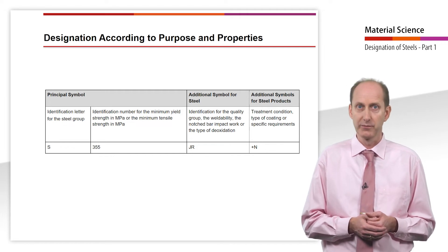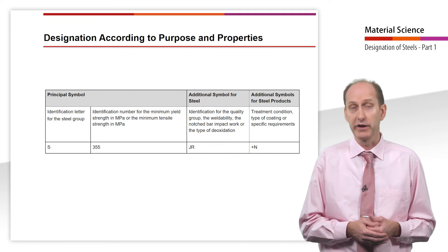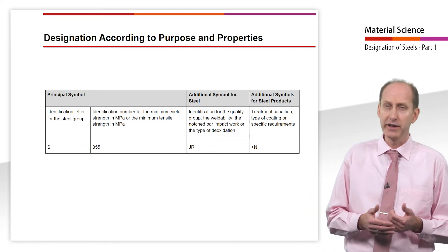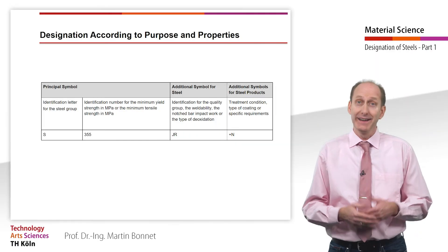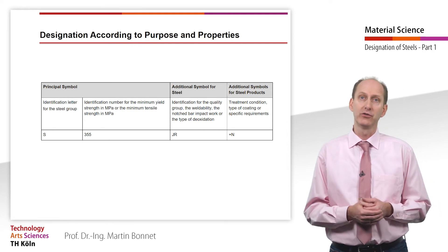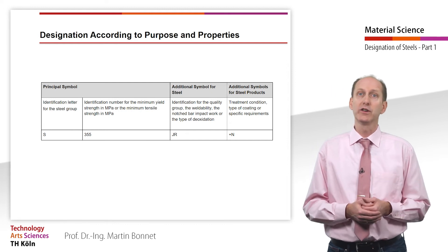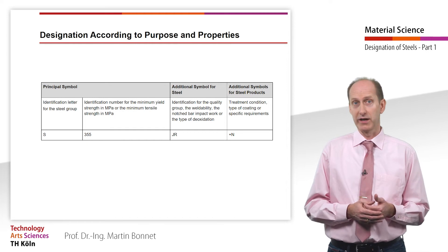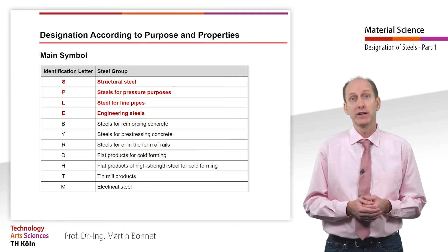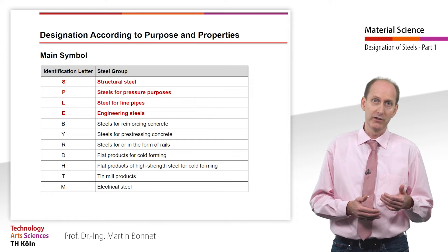For example, S 235. These can be followed by additional symbols for the quality group, the vulnerability, or the notch bar impact work — for example, JR for a value of 27 Joules at room temperature. And if required, identifiers for the type of deoxidation. Identification letters denoting the suitability for certain purposes can also be added, as well as additional symbols for steel products to indicate the treatment condition, type of coating, or specific requirements, separated by a plus sign — for example, plus N for normalized.